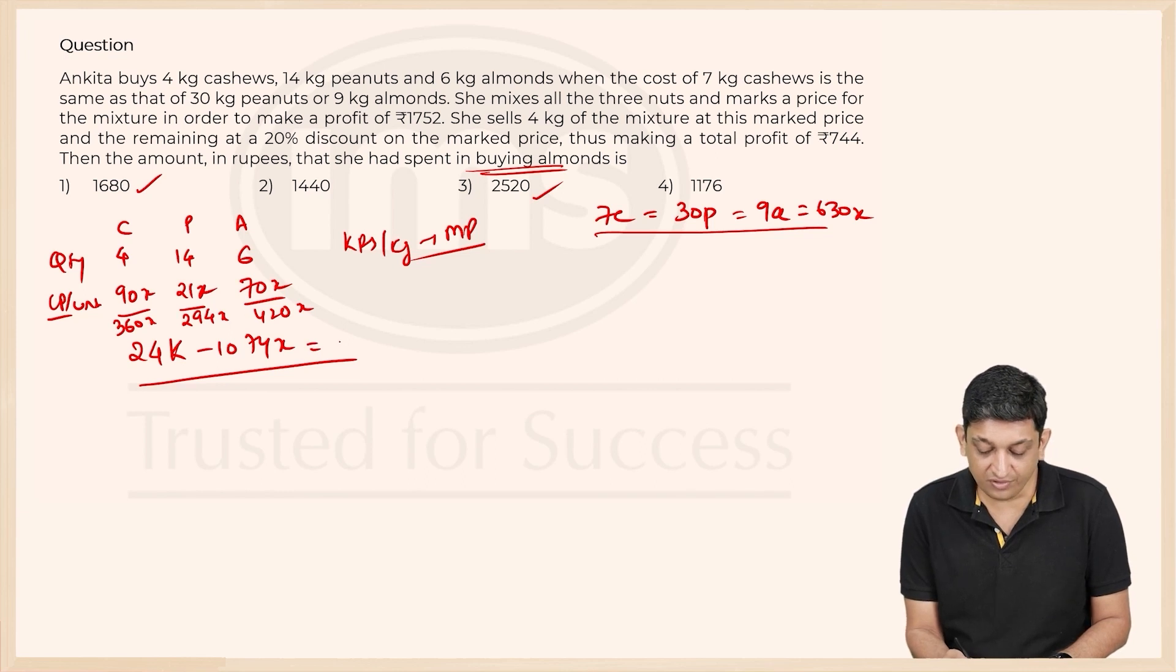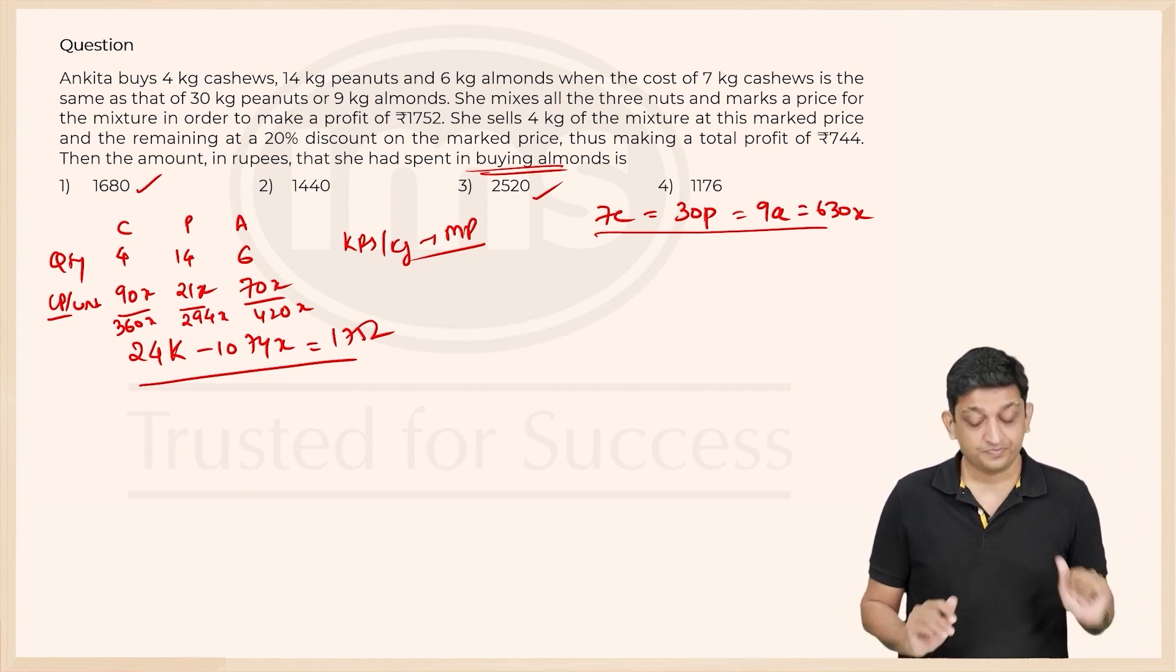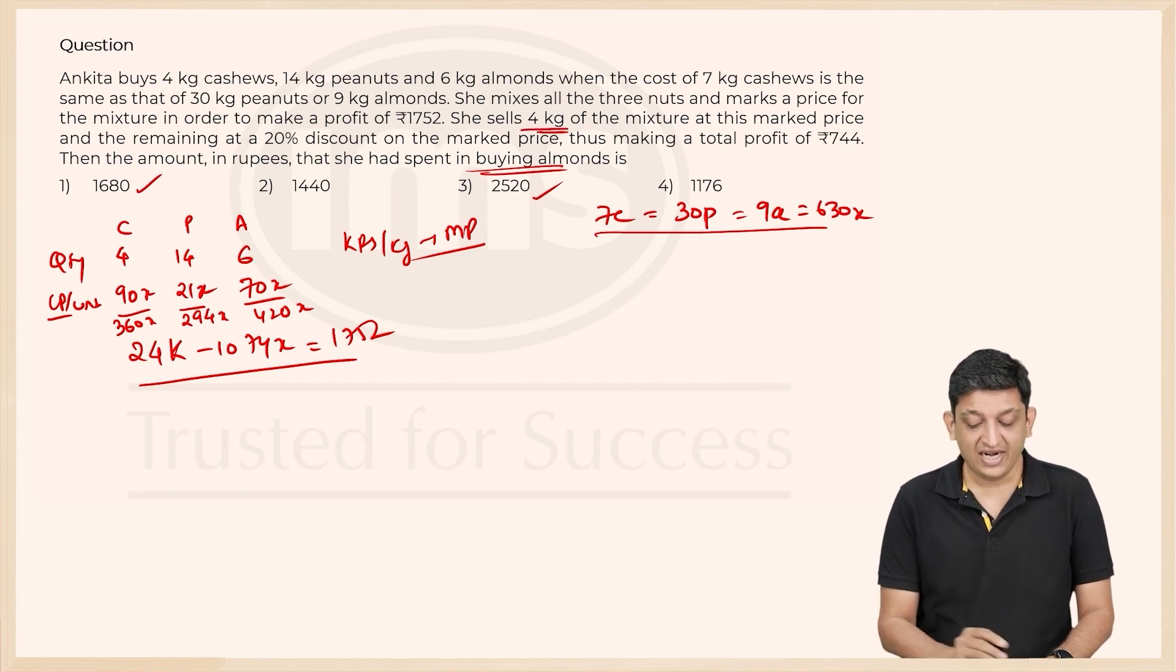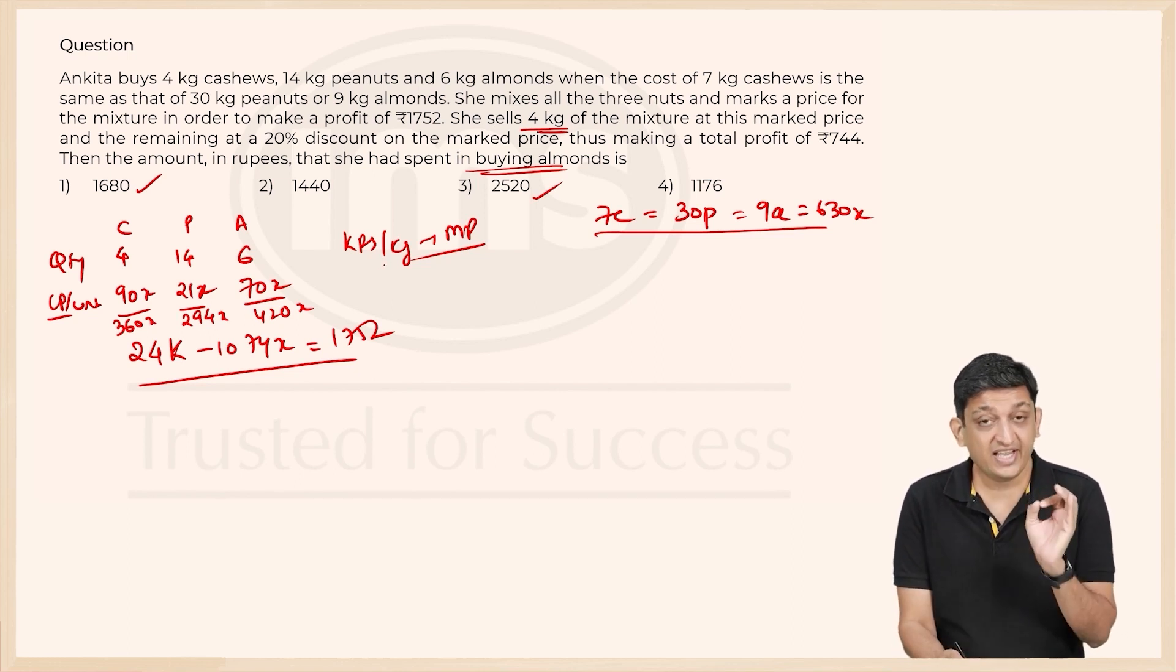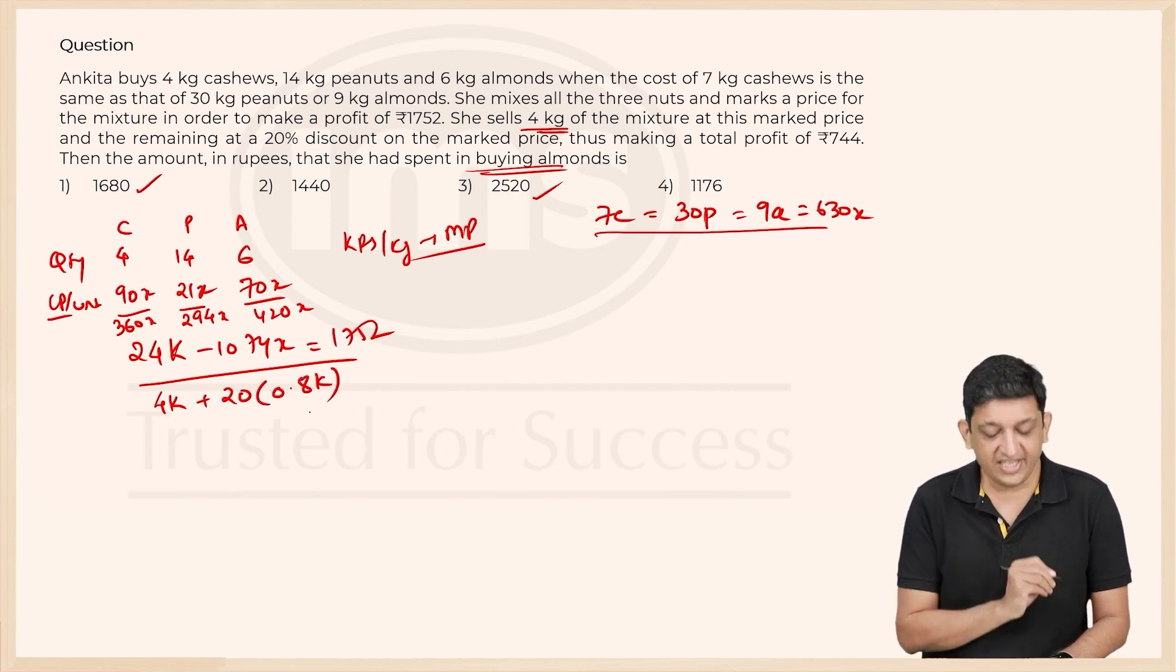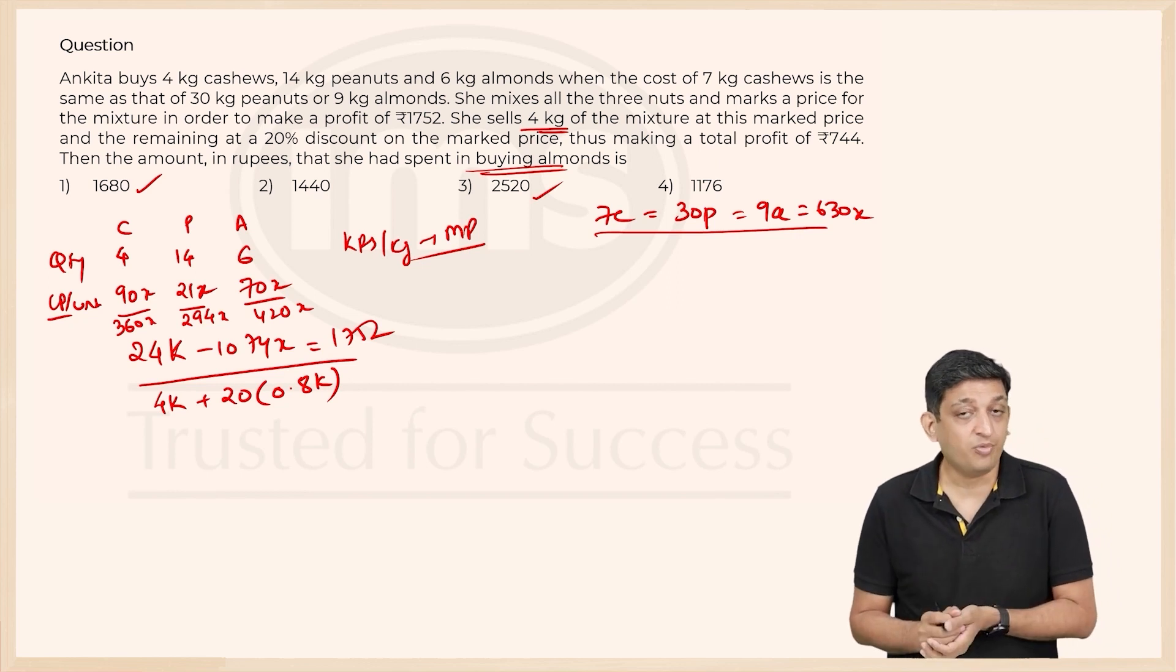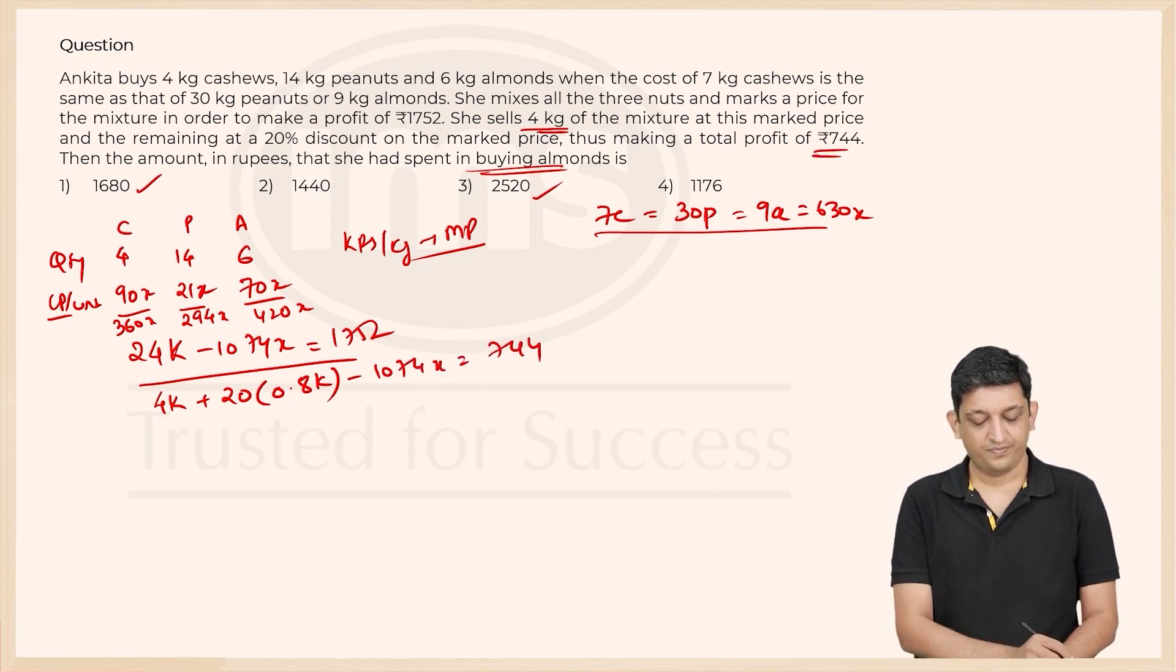So 24K minus 1074X would have been equal to 1752 because that is the profit that is being made if the marked price is set at some value. She sells 4 kg of this mixture at this marked price, so 4 kg would be 4K. And the remaining at a 20% discount on the marked price, so remaining is 20 into 0.8K because K is the marked price, 20% discount will give 0.8K as the marked price. Now this basically when subtracted from the cost price gives us a profit of 744.